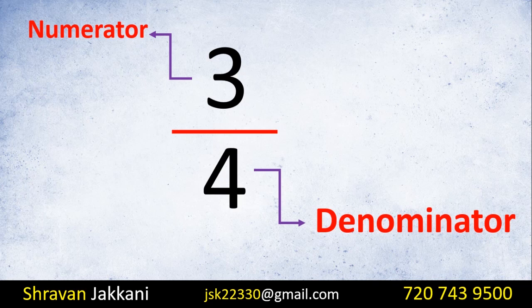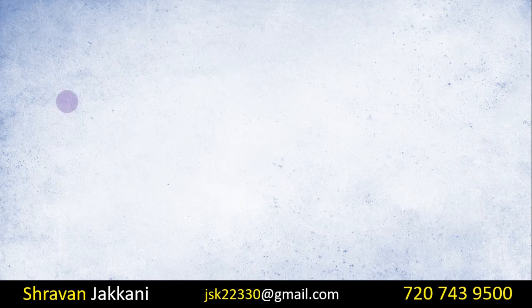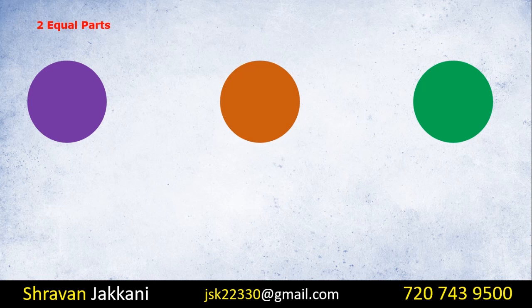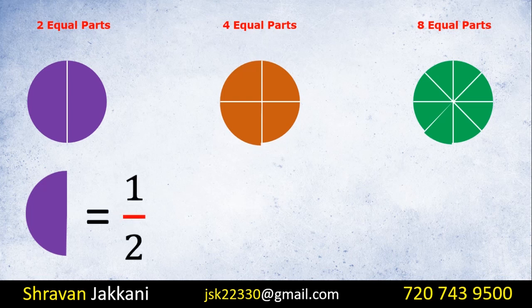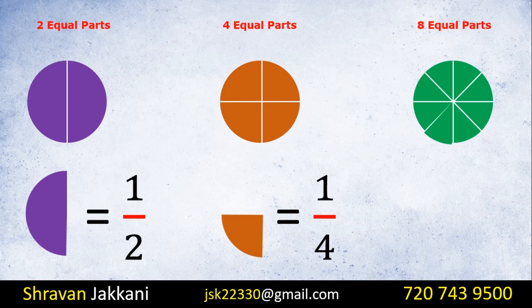I will show you three circles. In the first circle we now have 2 equal parts, in the second circle we have 4 equal parts, and in the third circle we have 8 equal parts. In the first circle the piece is 1 by 2, in the second circle the piece is 1 by 4, and in the third circle the piece is 1 by 8.